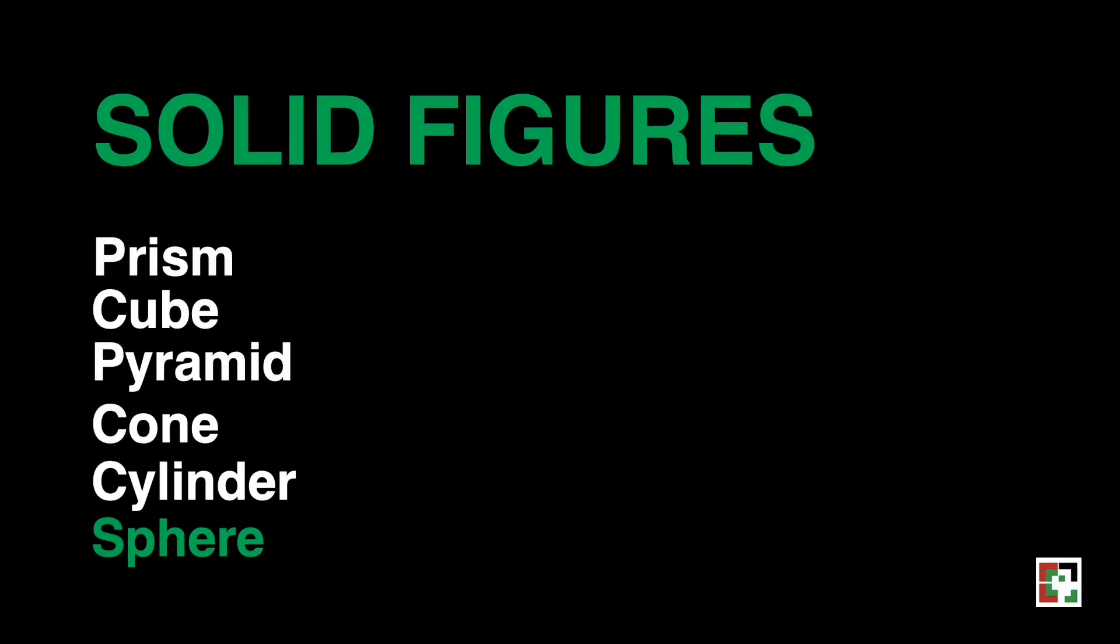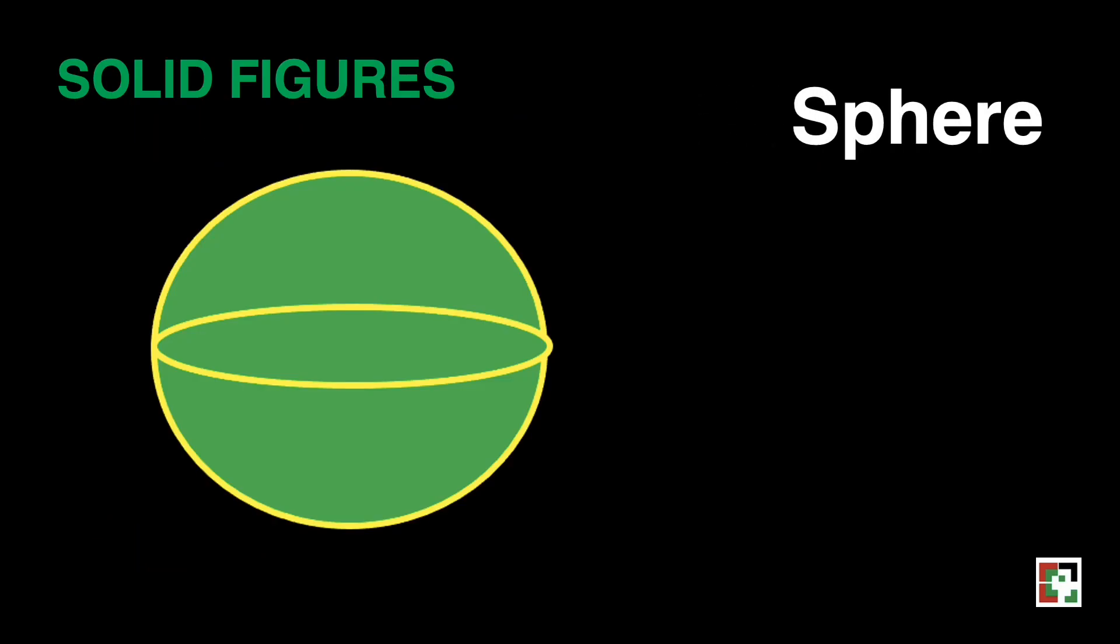Let us move to sphere. This is a sphere. A sphere is a figure with a curved surface in which all points on the surface are equal distance from the center. This is our radius. And this is the center.